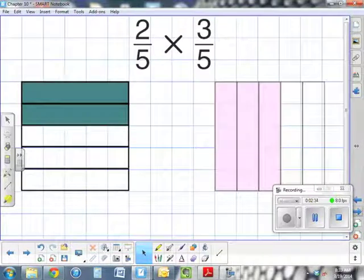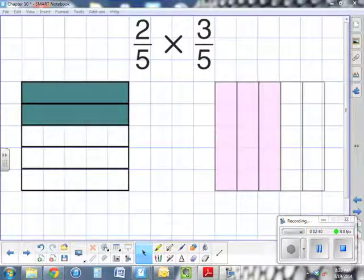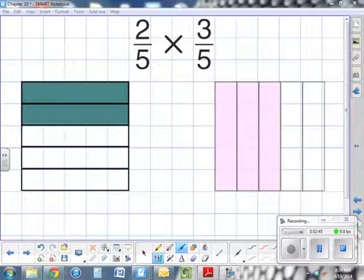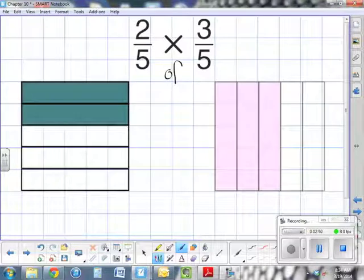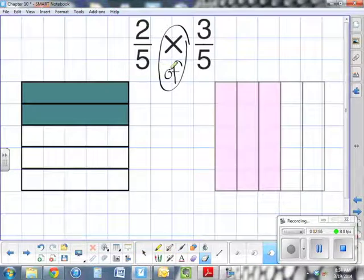Now for the second problem, we're going to use a different approach. We have two-fifths times three-fifths. This time I've created a fraction model for two-fifths and a fraction model for three-fifths. I have two-fifths on the left-hand side and three-fifths on the right-hand side. They're already shaded in. Once again, it's two-fifths of three-fifths.